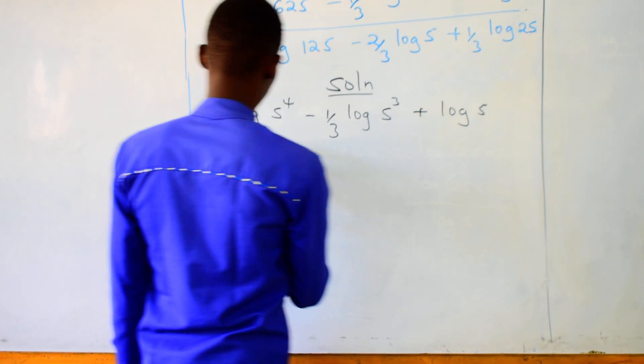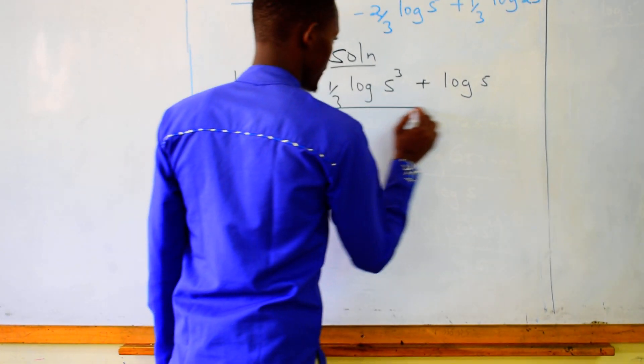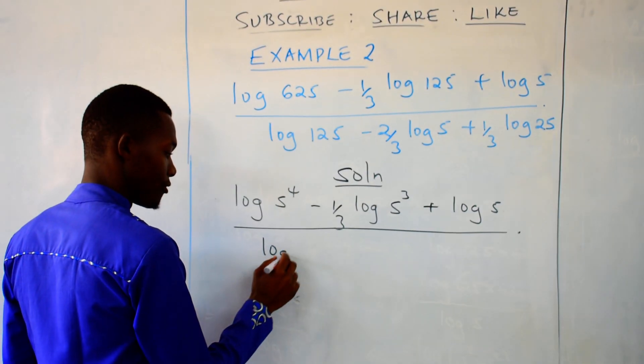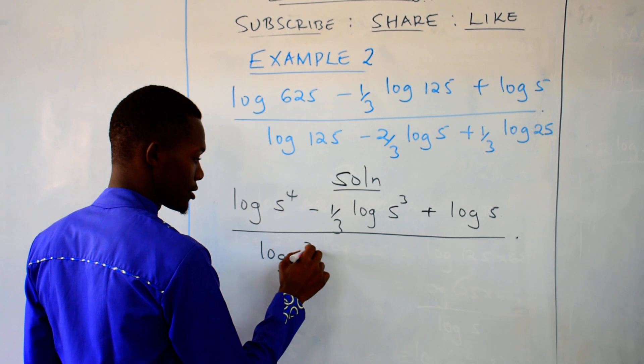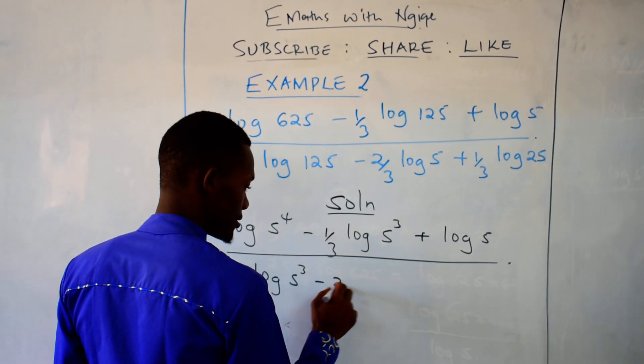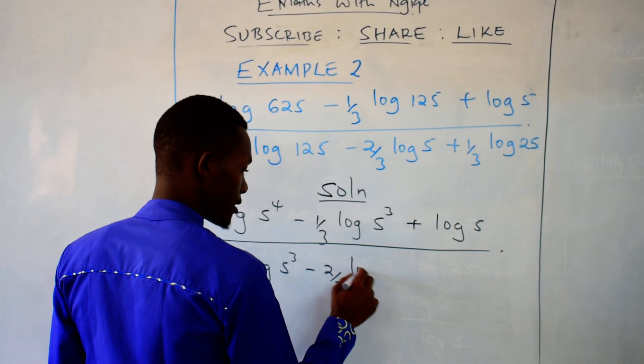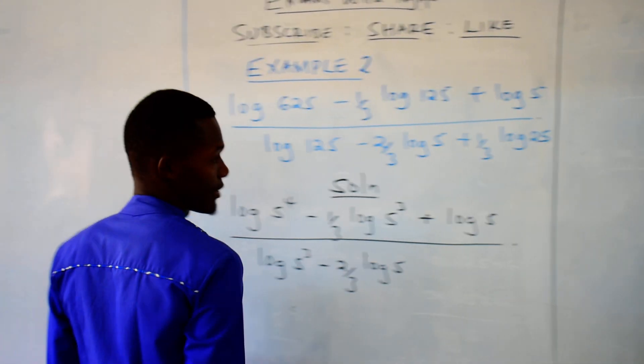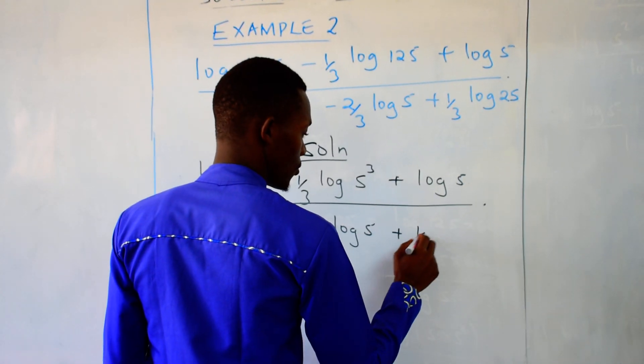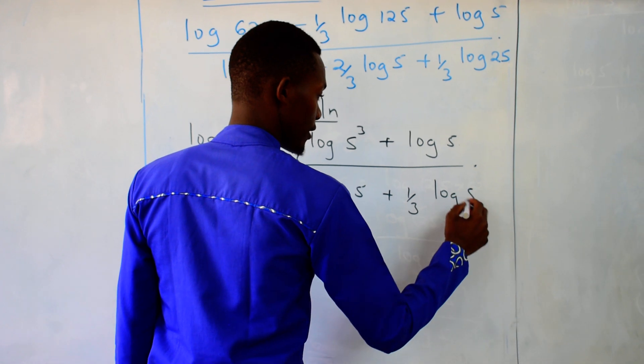Then divide by log of 5 again to power 3 minus two over three log of 5, then plus one over three log of 5 squared.